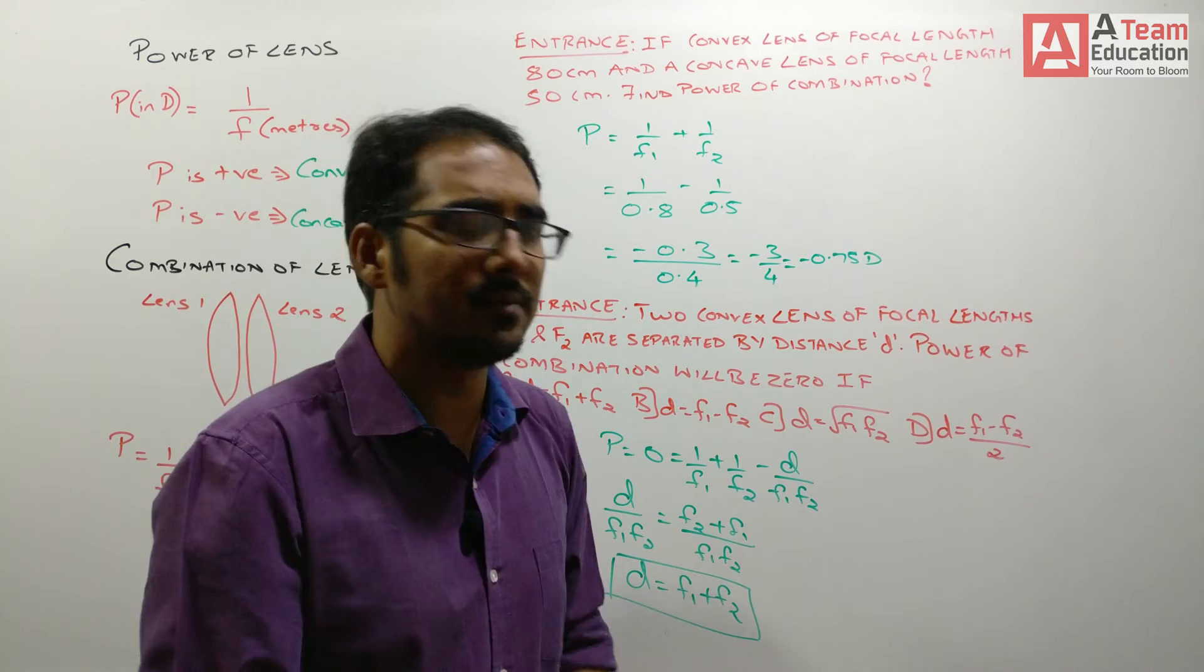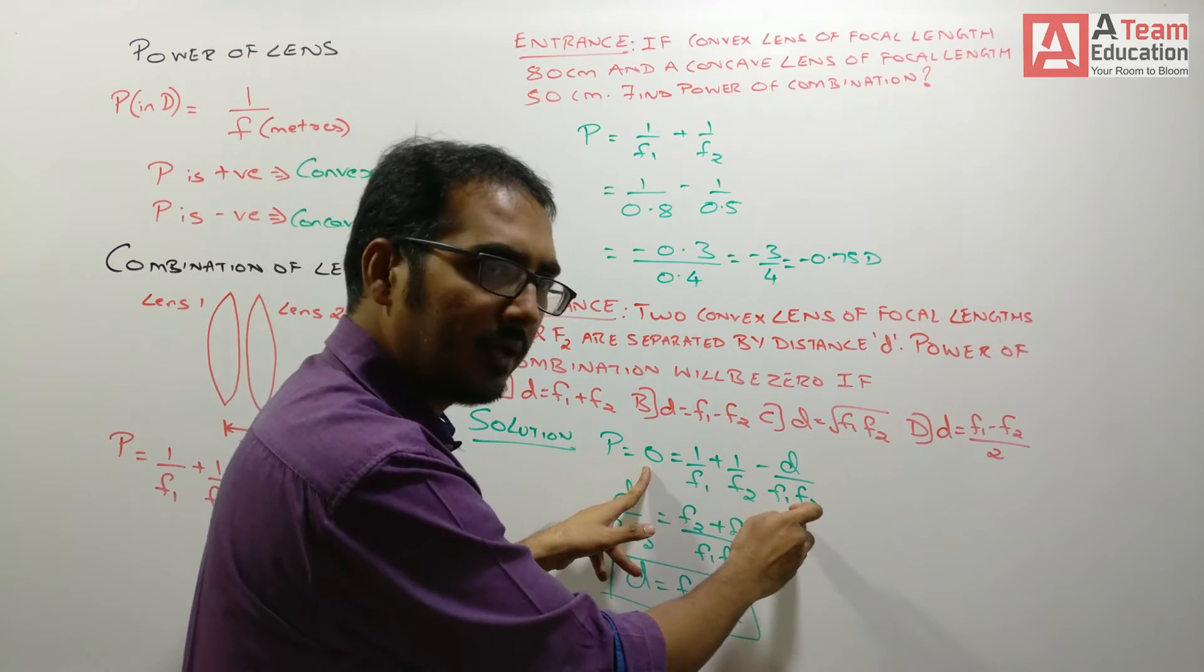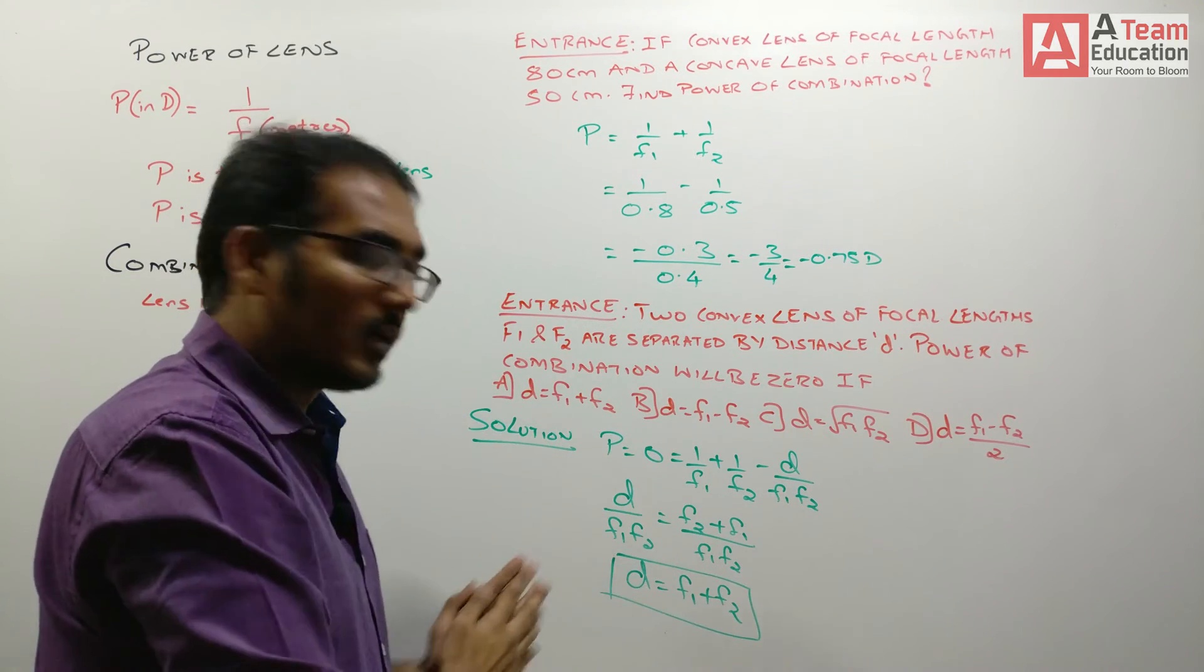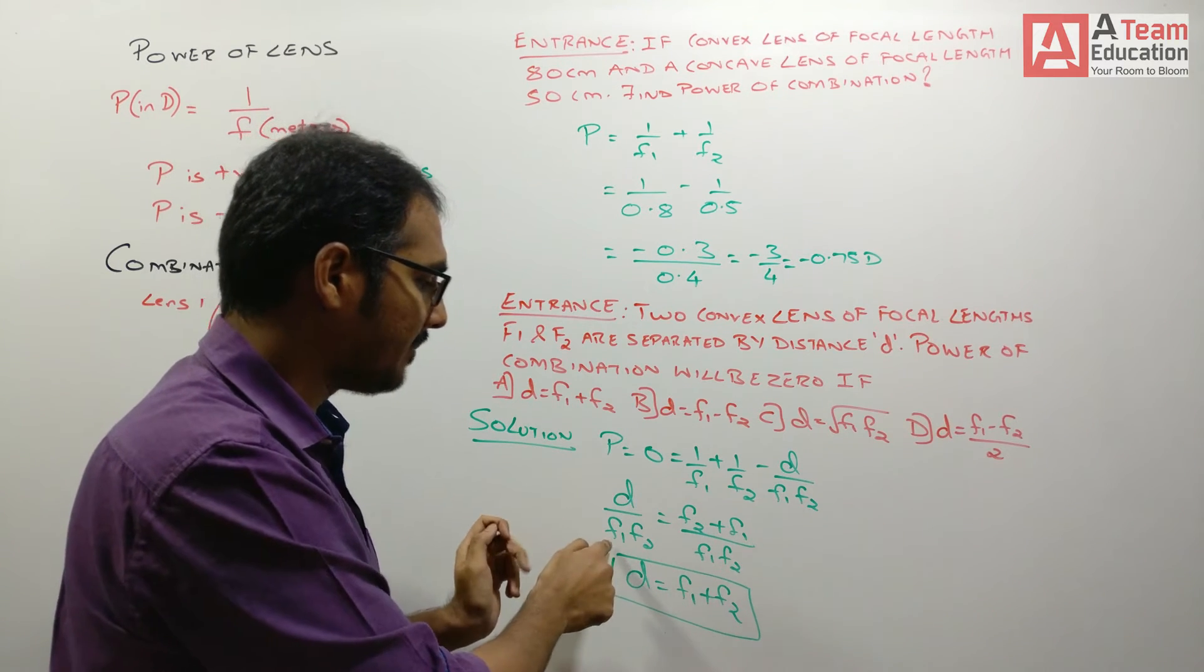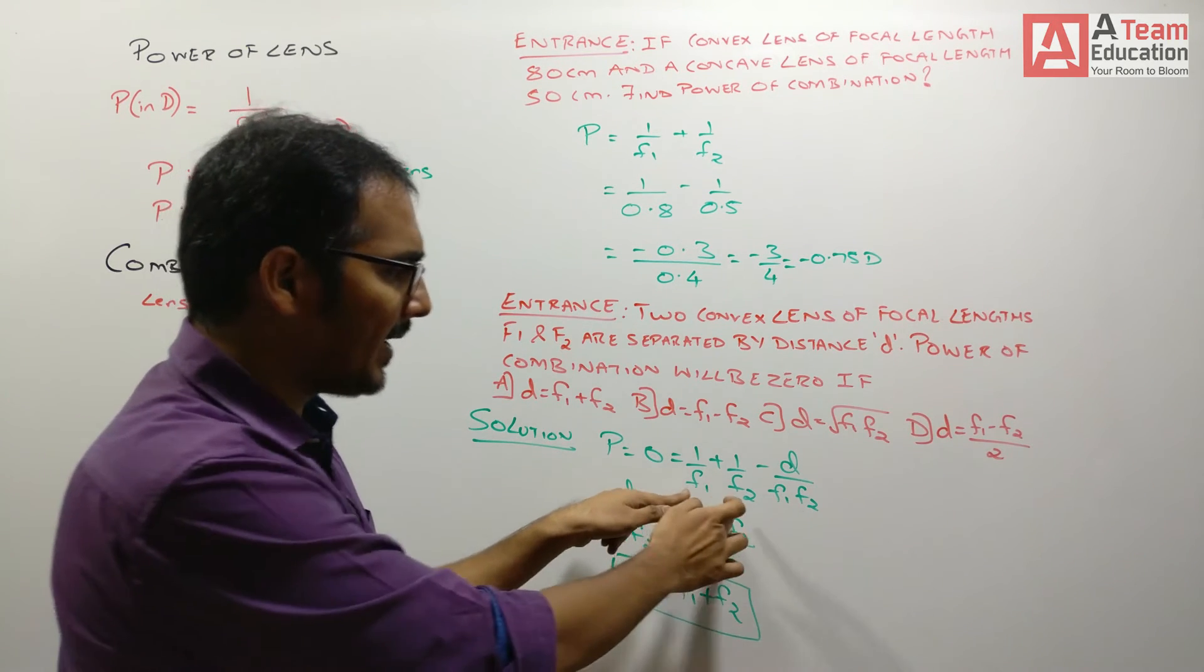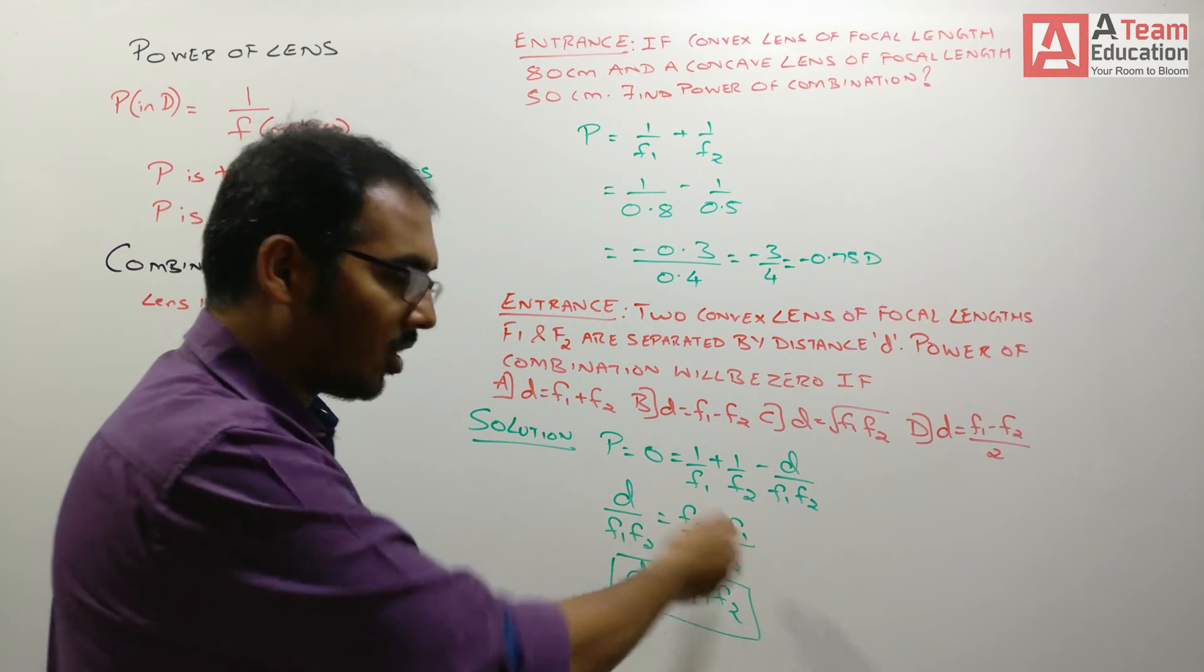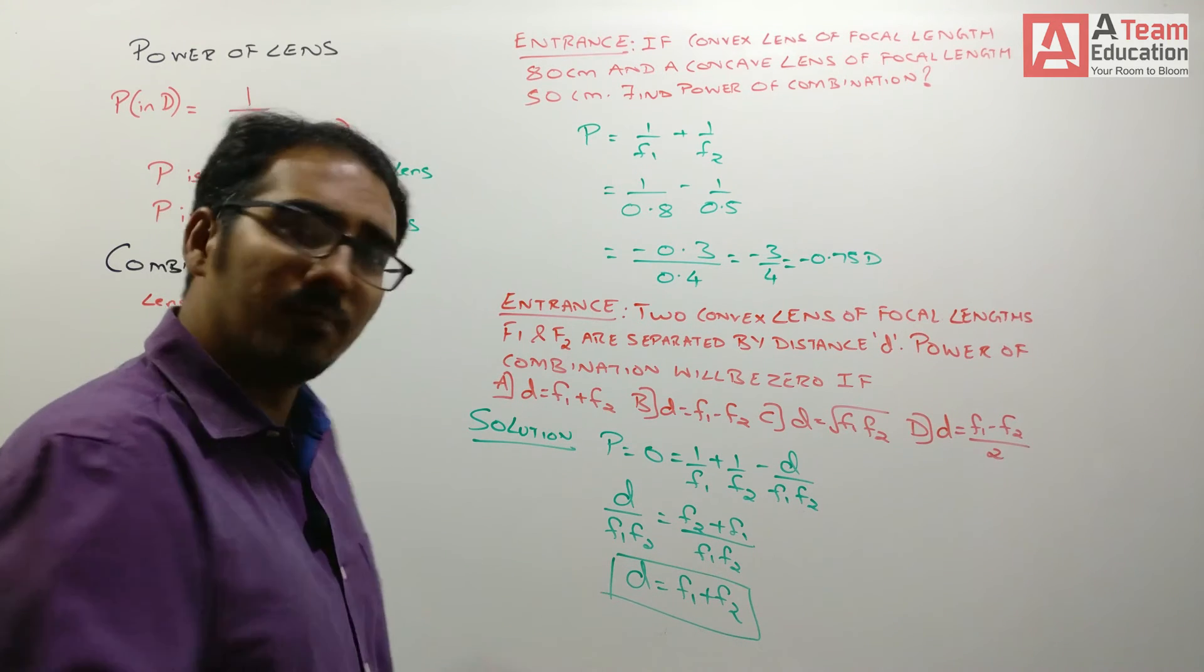Then, after that it's simple maths. 0 equals 1 upon f1 plus 1 upon f2 minus D upon f1 f2. This D has a negative sign. We take it from right hand side to left hand side. So it becomes D divided by f1 f2. And here I'll take the LCM. I will get f2 plus f1 divided by f1 f2. So the denominators will get cancelled. D will be f1 plus f2.